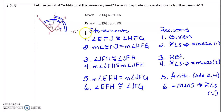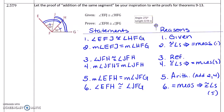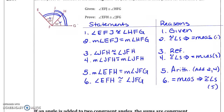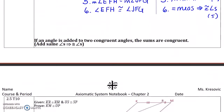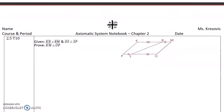Let's not forget the T tool. We've marked our diagram and it looks good. So there we have adding the same angle implies congruent angles.